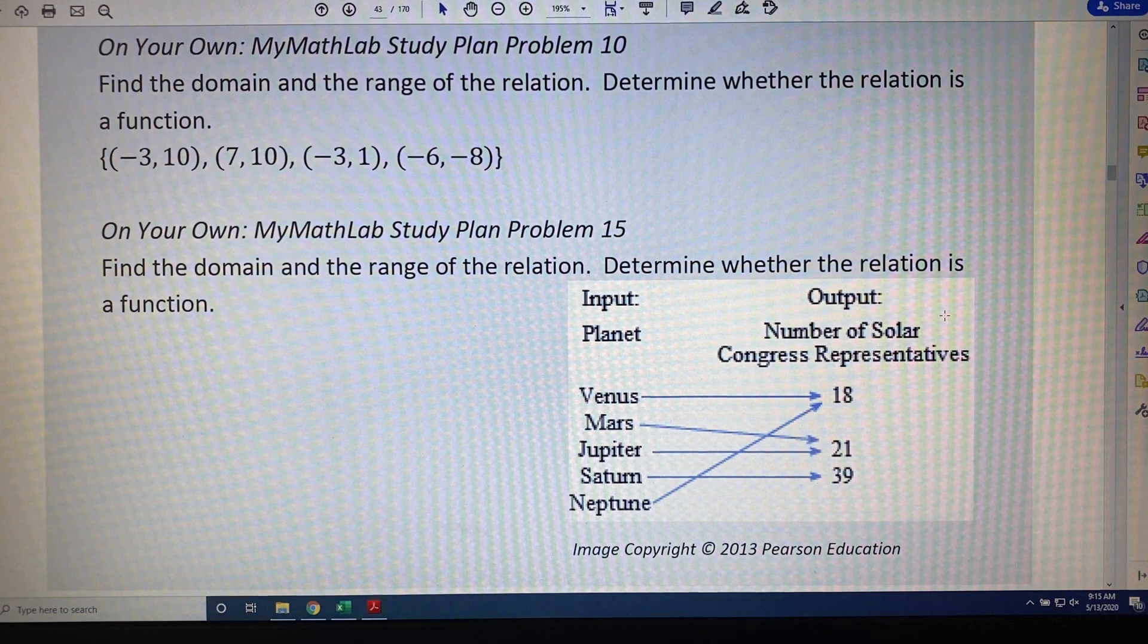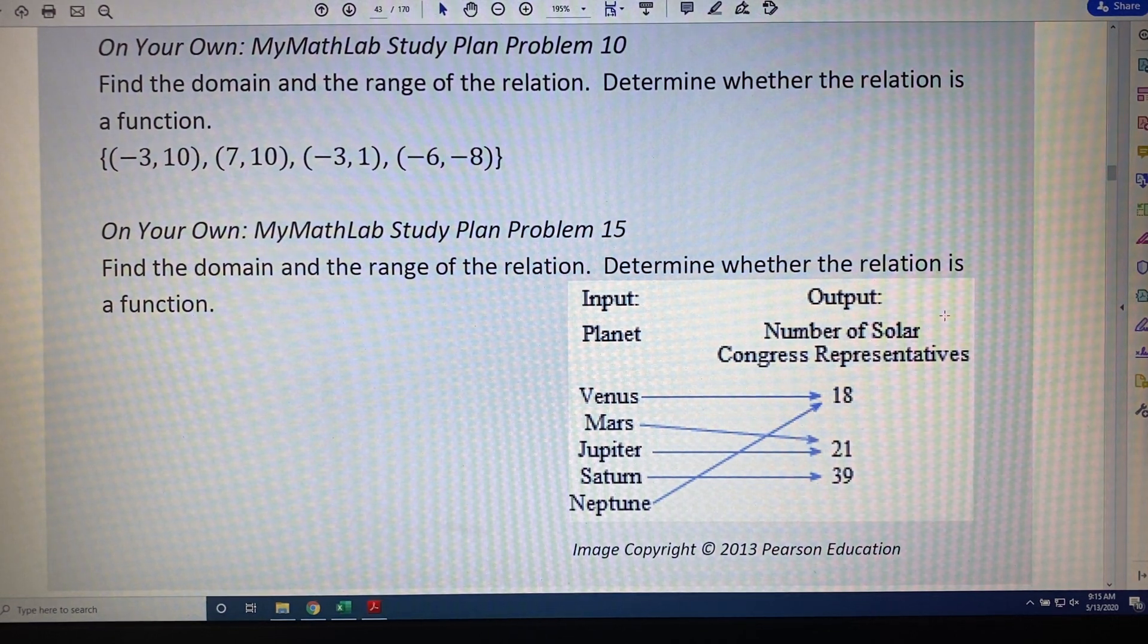The range is a collection of all of the outputs of a relation. It follows the same rule. If a value shows up more than once, we only represent it one time in our final answer.